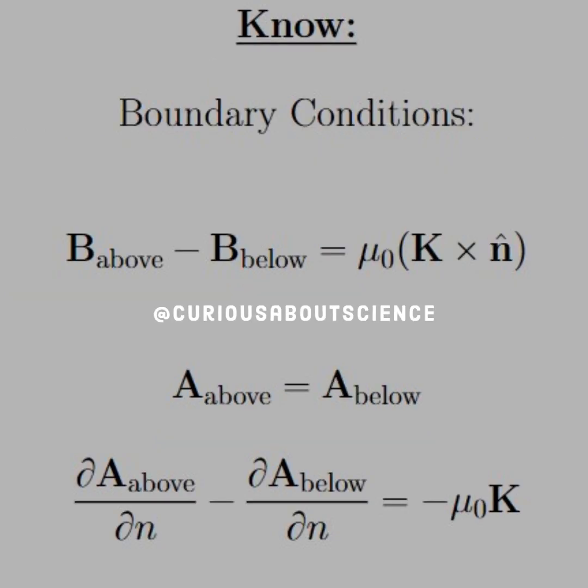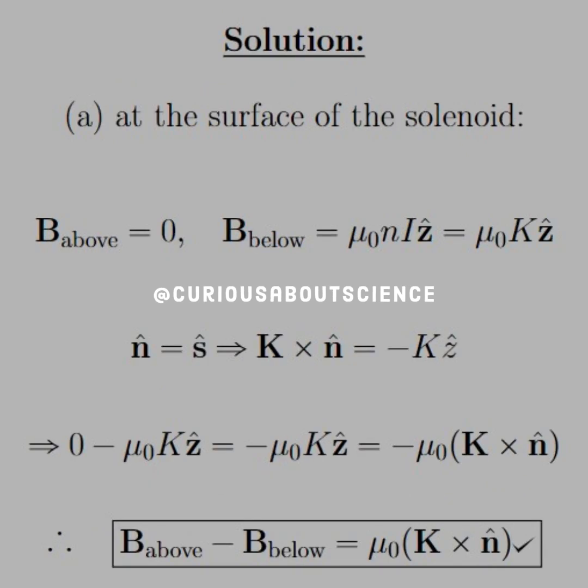Now, what we should know: the boundary conditions for the magnetic field are B_above minus B_below equals mu naught times the area current density cross the normal direction, and A_above equals A_below, followed by the normal derivative above minus the normal derivative below equals negative mu naught K. Alright, so Part A.